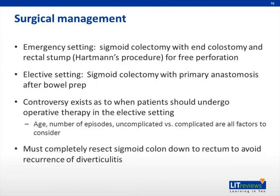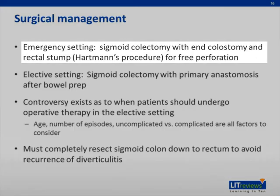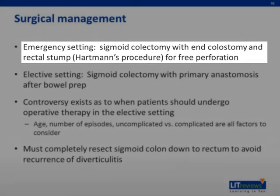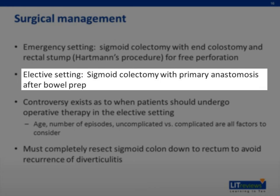Let's discuss the general principles involved in surgical management of diverticular disease. As previously mentioned, in the emergency setting with free perforation and significant intra-abdominal contamination, the usual treatment is emergency sigmoid colectomy and end colostomy, or Hartmann's procedure. However, in less severe cases, the acute inflammatory process is treated with IV antibiotics and bowel rest. Any associated abscesses are drained percutaneously. After resolution of the acute inflammation, the patient can be discharged and brought back at a later date for an elective sigmoid colon resection. In the elective setting, the colon is mechanically prepped and a primary anastomosis is performed in a single stage procedure.